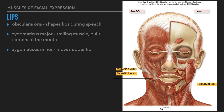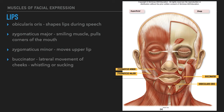The zygomaticus minor elevates the upper lip, exposing the teeth. It sits slightly medial to the zygomaticus major and pulls on a slightly different portion of the lip. Its origin is the zygomatic bone and insertion is the skin of the upper lip. The buccinator — named for the buccal anatomical region — causes lateral movement of the cheeks when it contracts at the corner of the mouth. It is responsible for whistling and the sucking motion. The origin is the processes of the maxilla and mandible as well as the sphenoid bone, and the insertion is near the corner of the mouth at the orbicularis oris.